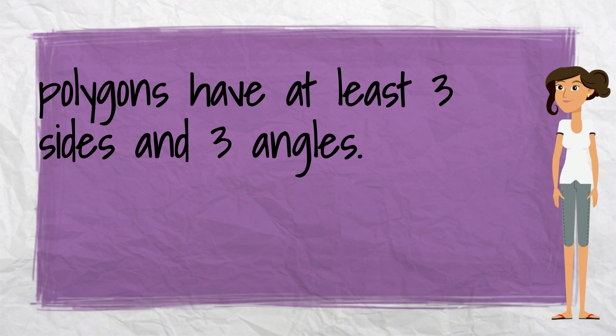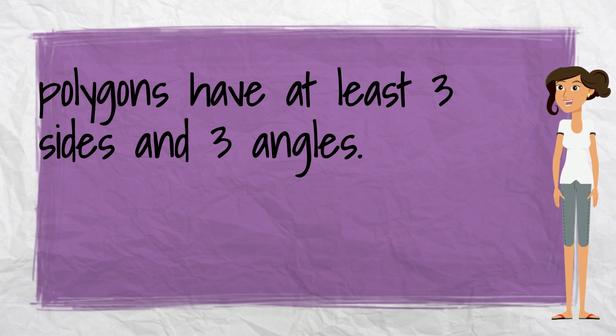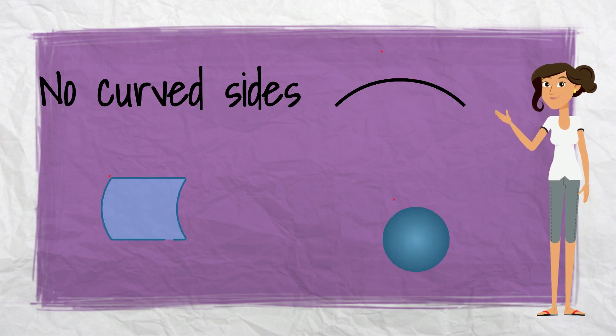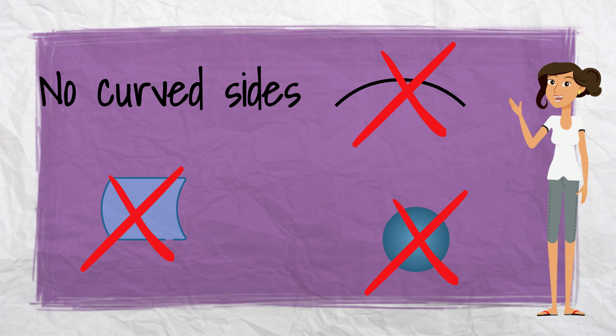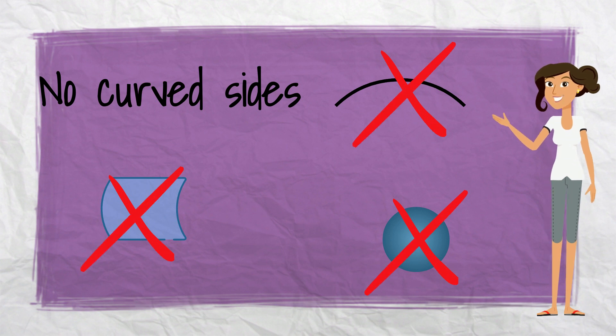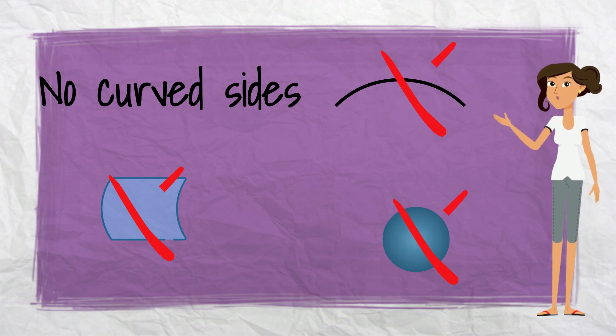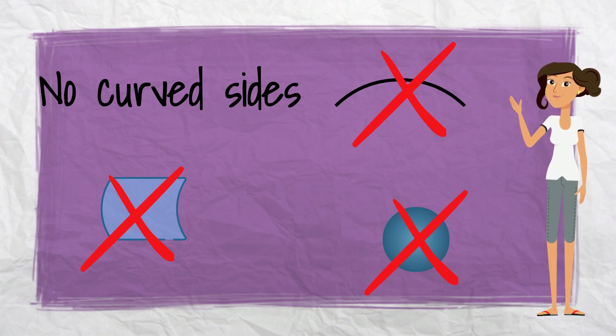The most important thing about polygons is that they have at least three sides and three angles. Another thing to know about polygons is that they cannot have any curved sides.